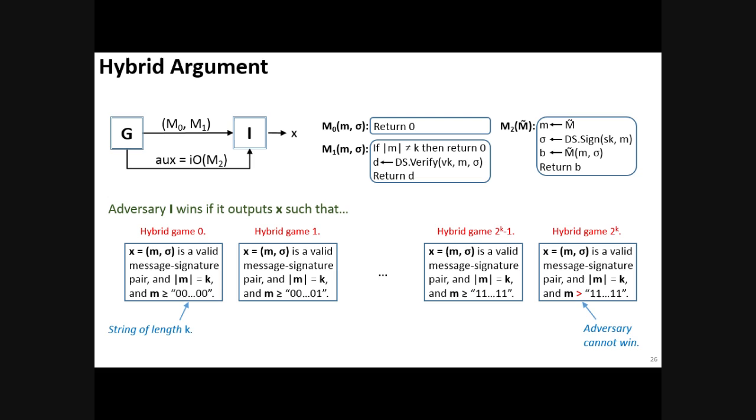We do this using a hybrid argument as follows. Our hybrid argument iterates through every single message of length k, and for each of these messages it argues that a polynomial time adversary is unlikely to produce or forge a valid signature for this message. Hybrid game zero is the original game where the adversary can produce any message signature pair in order to distinguish M0 from M1. Hybrid game 2 to the power k, it is impossible to win this game because it requires the message of length k to be lexicographically larger than 2^k-1.